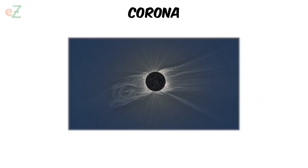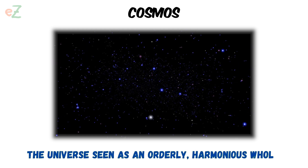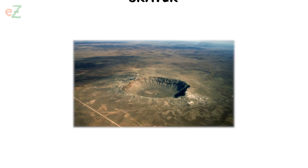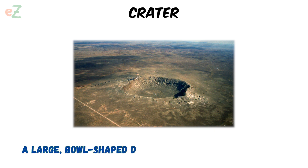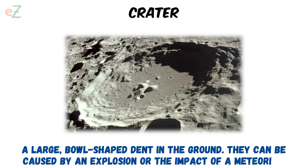Corona. The outer atmosphere of a star. Cosmos. The universe seen as an orderly harmonious whole. Crater. A large bowl-shaped dent in the ground. They can be caused by an explosion or the impact of a meteorite.